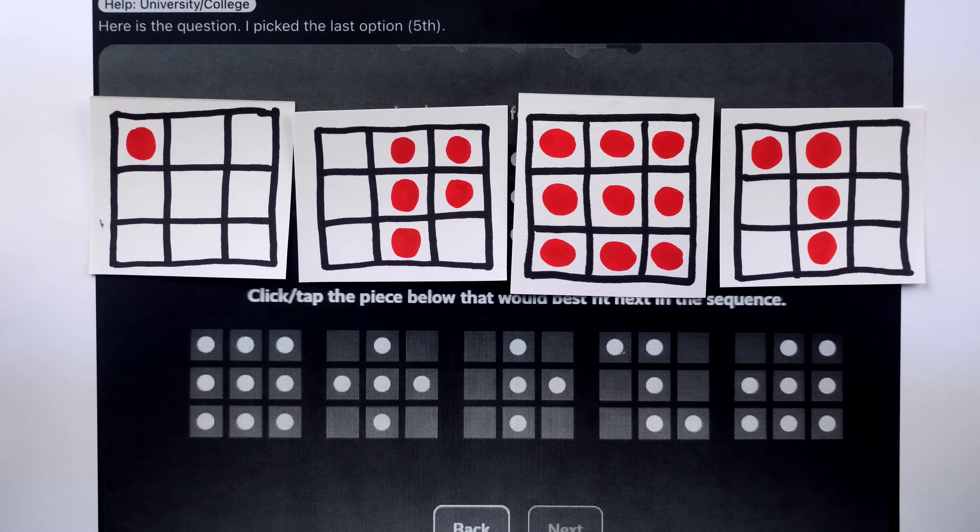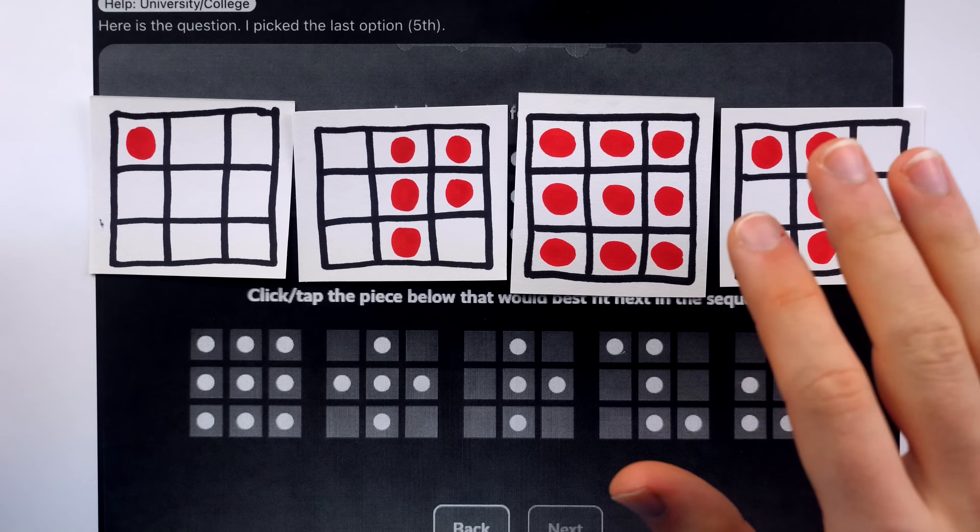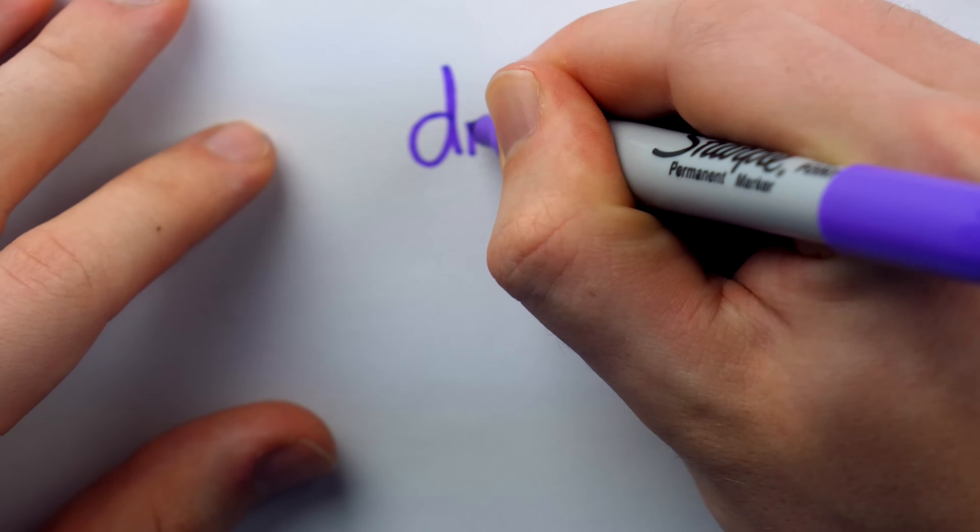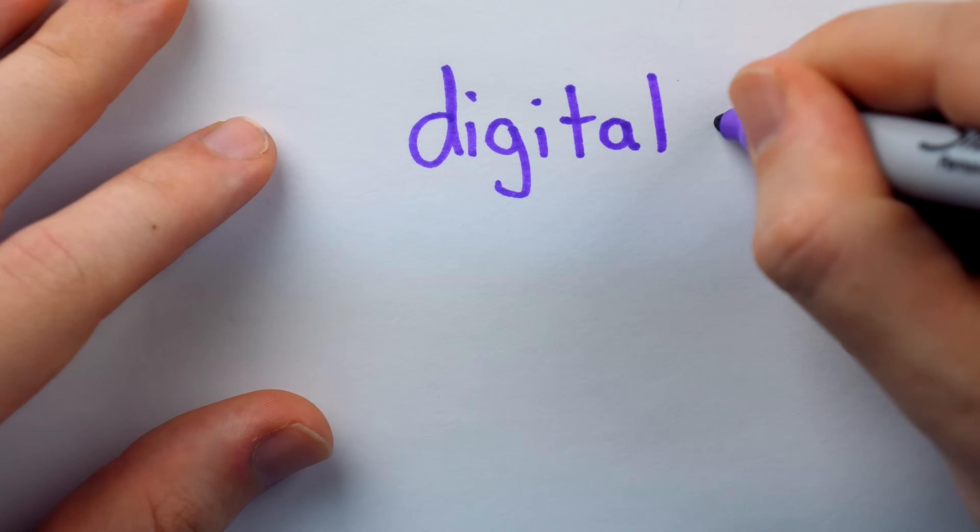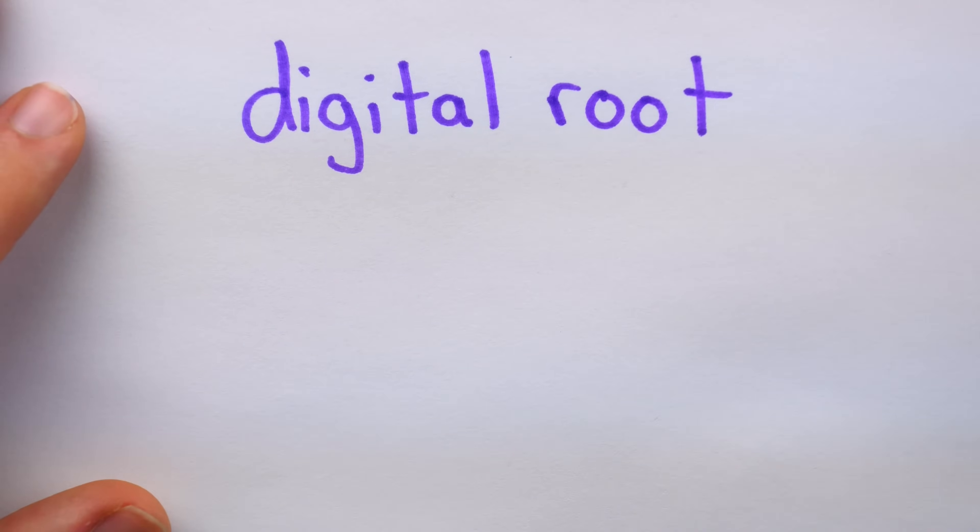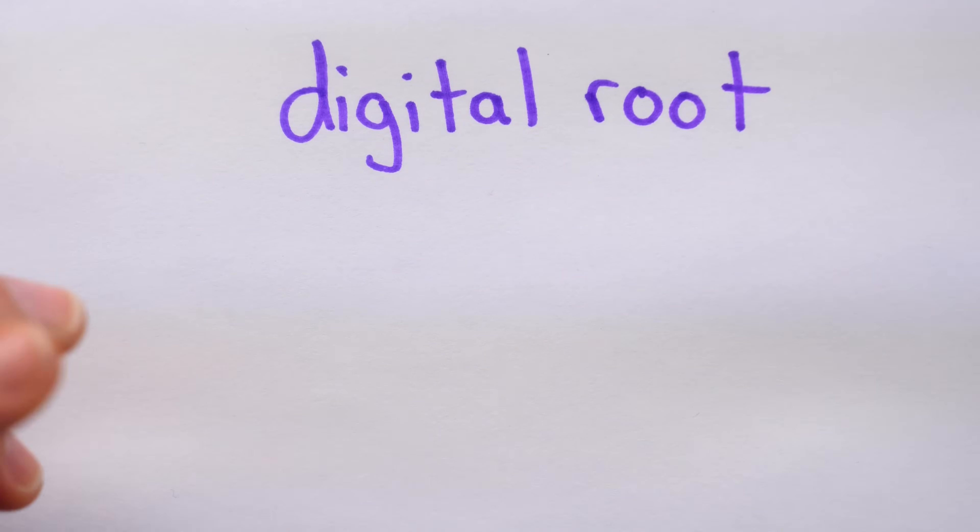Indeed, most of the simple arguments seem to support option 5. However, let me offer you another explanation, which supports option 1. You see, there is a thing called a digital root. This is a number obtained from some other number by adding its digits together repeatedly until a single-digit number is arrived at.